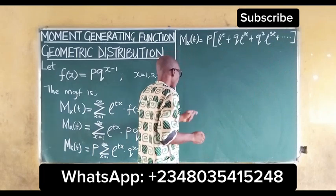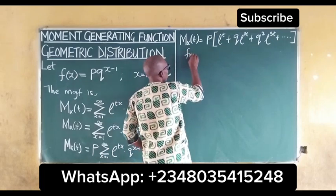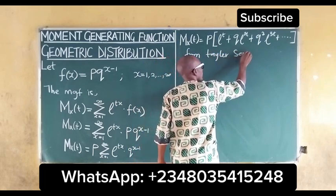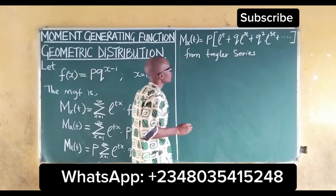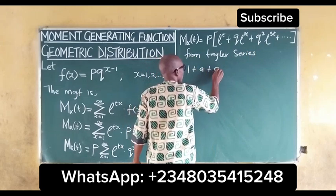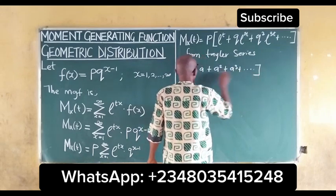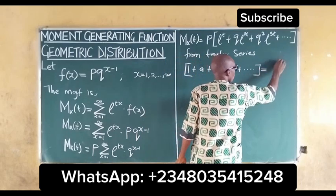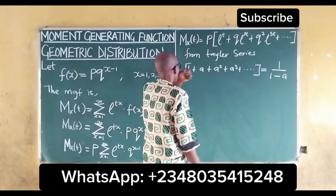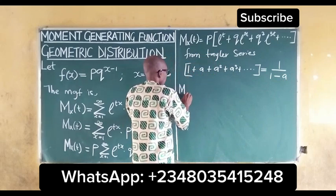We can deduce something from this. From Taylor series mathematics, we have that 1 plus a plus a² plus a³ and so on is equal to 1 over (1 minus a).